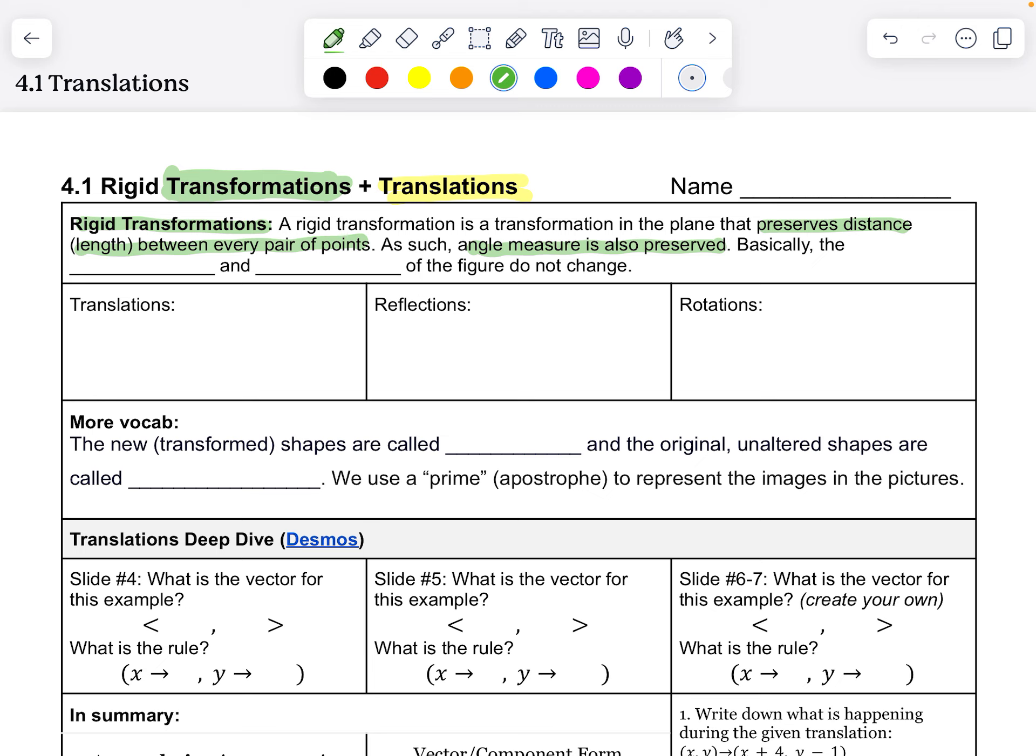Basically, when you do a rigid transformation, the size and shape of a figure do not change. For translations, reflections, and rotations, these are all types of transformations.